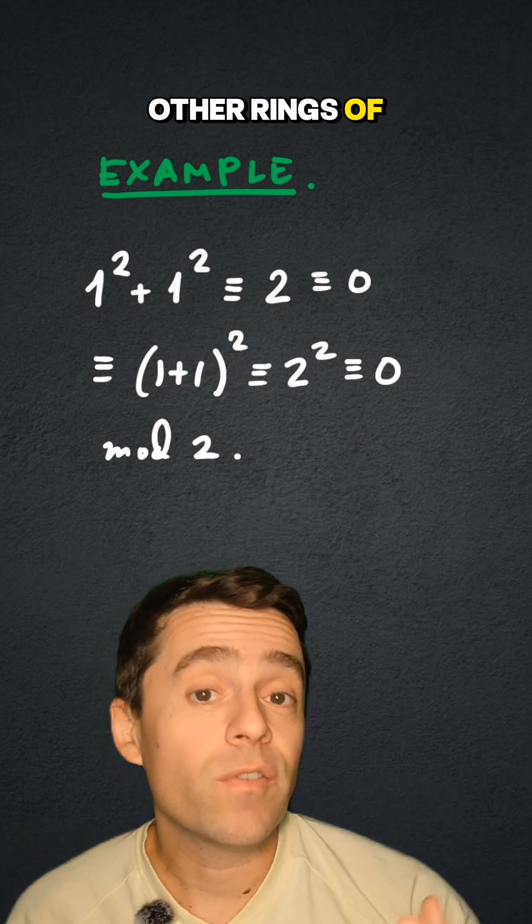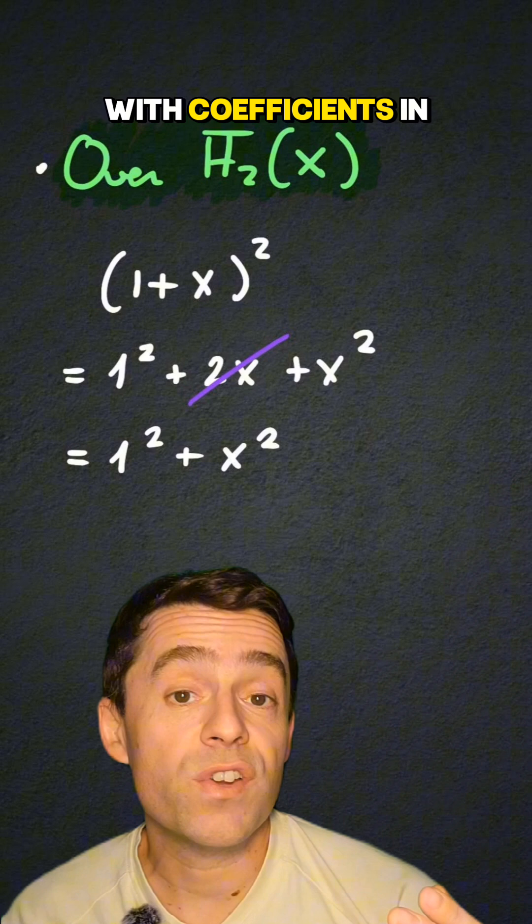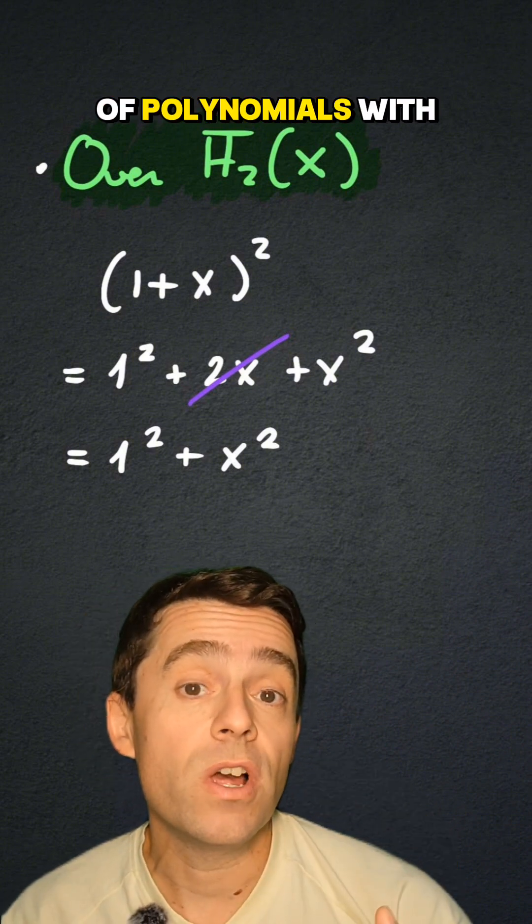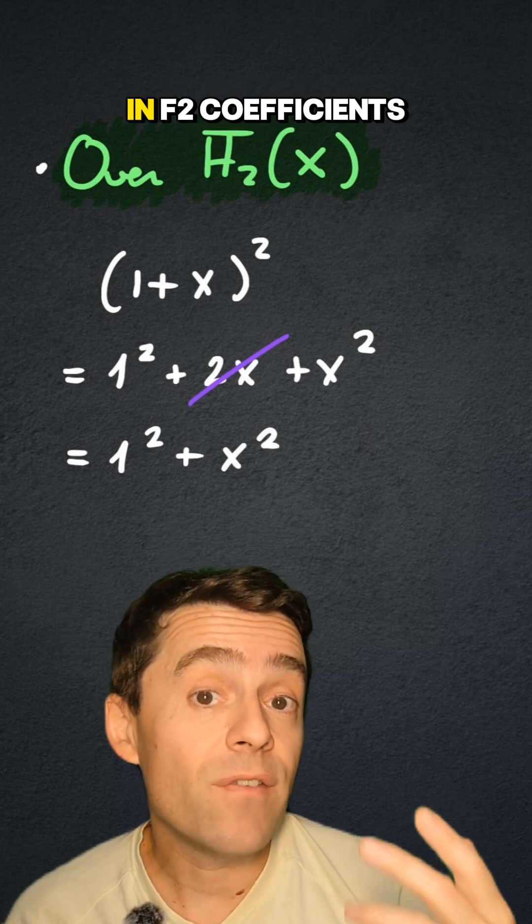However, there are all the rings of characteristic 2 that are infinite, such as polynomials with coefficients in F2 and the quotient of polynomials with coefficients in F2 that gives you the rational functions with F2 coefficients.